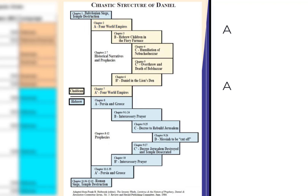The B section in chapter 3 talks about the Hebrew children who went into the fiery furnace, and chapter 6 talks about Daniel in the lion's den — two major tests of faith.